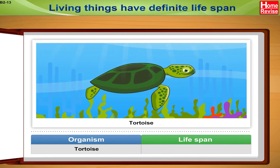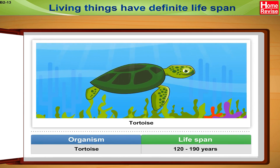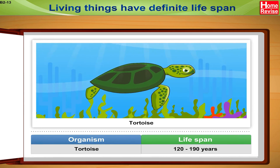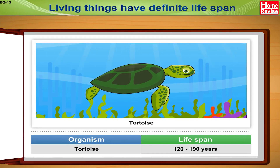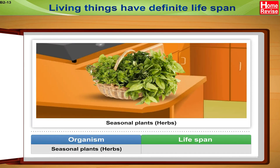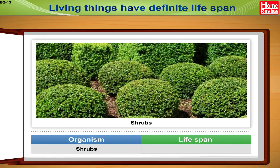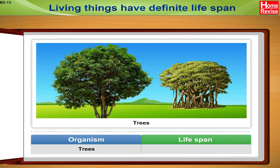The life span of an elephant is seventy to ninety years. The life span of a tortoise is one hundred and twenty to one hundred and ninety years. Seasonal plants like herbs have a life span of two to three months. Shrubs have a life span of several years, and trees have a life span of up to a hundred years or more.